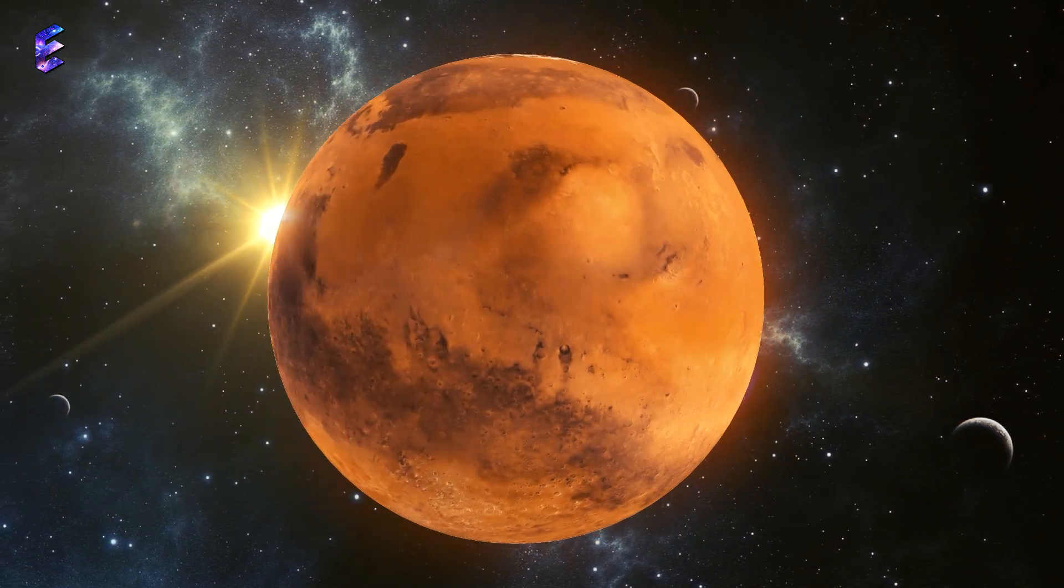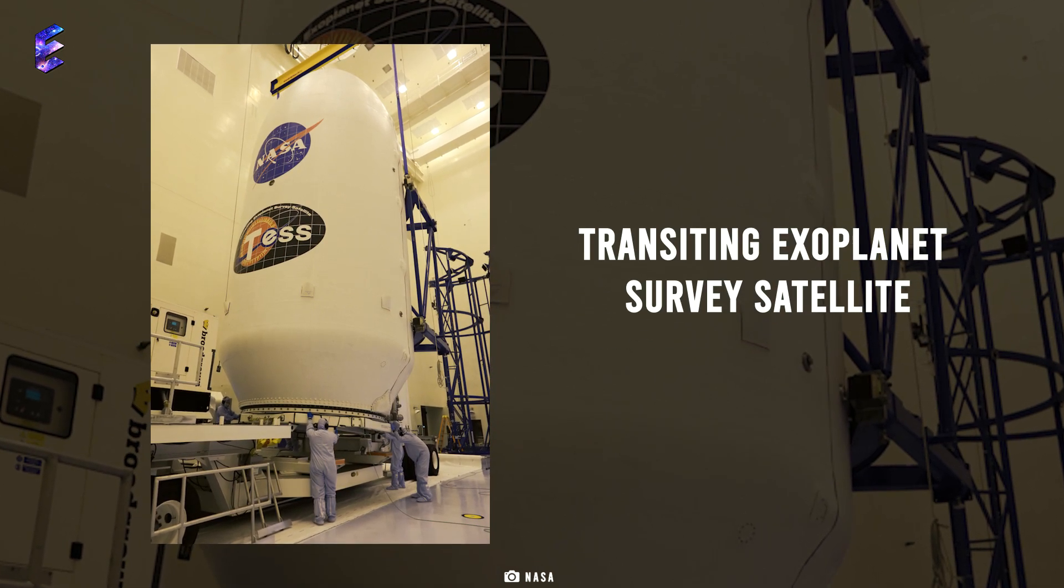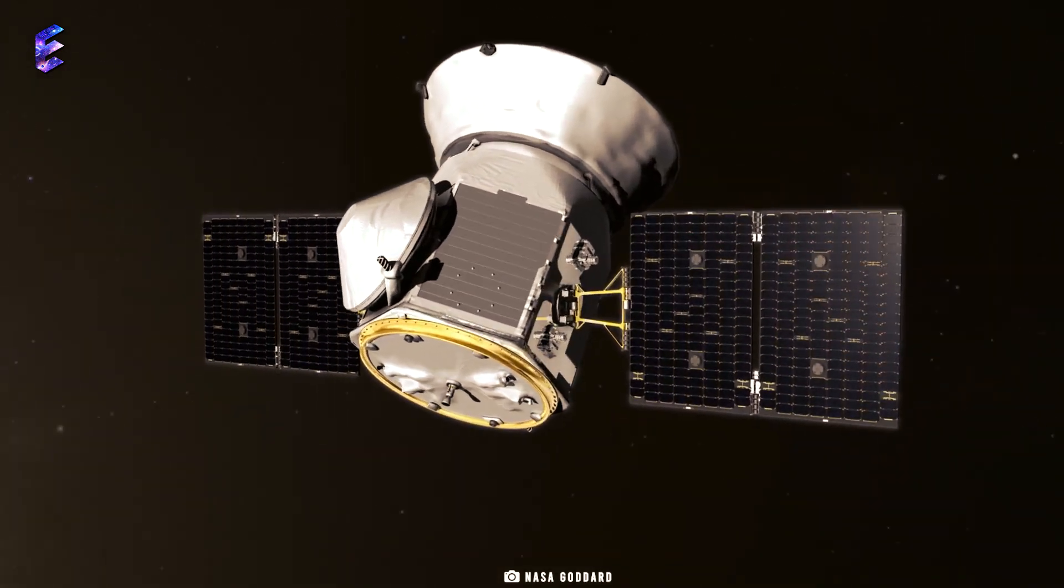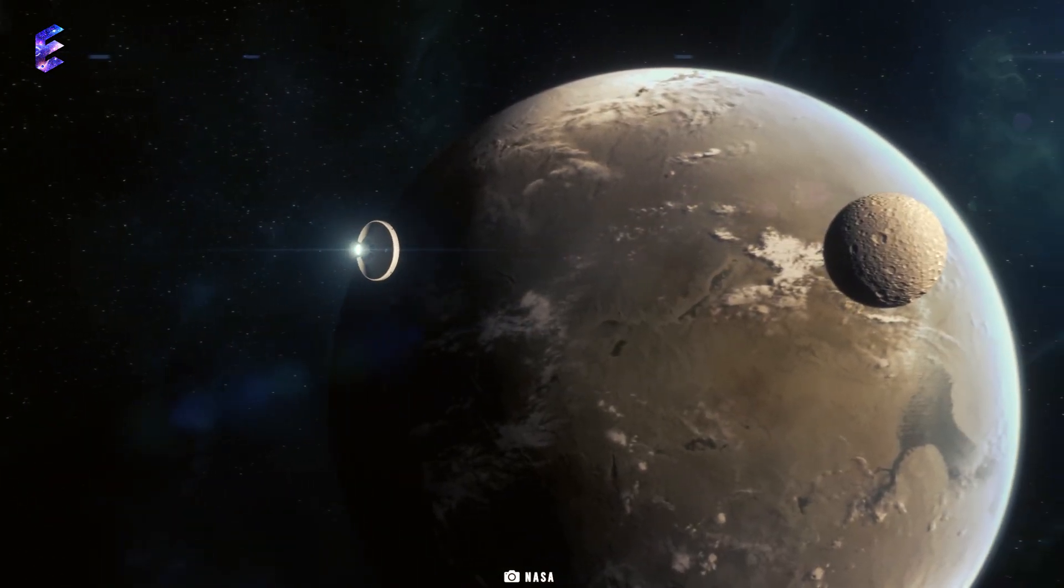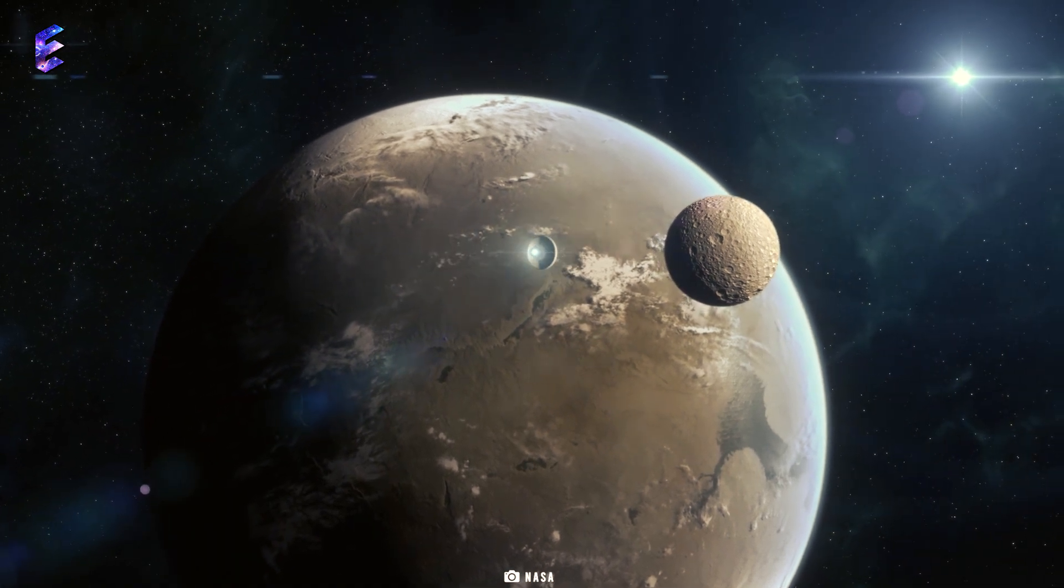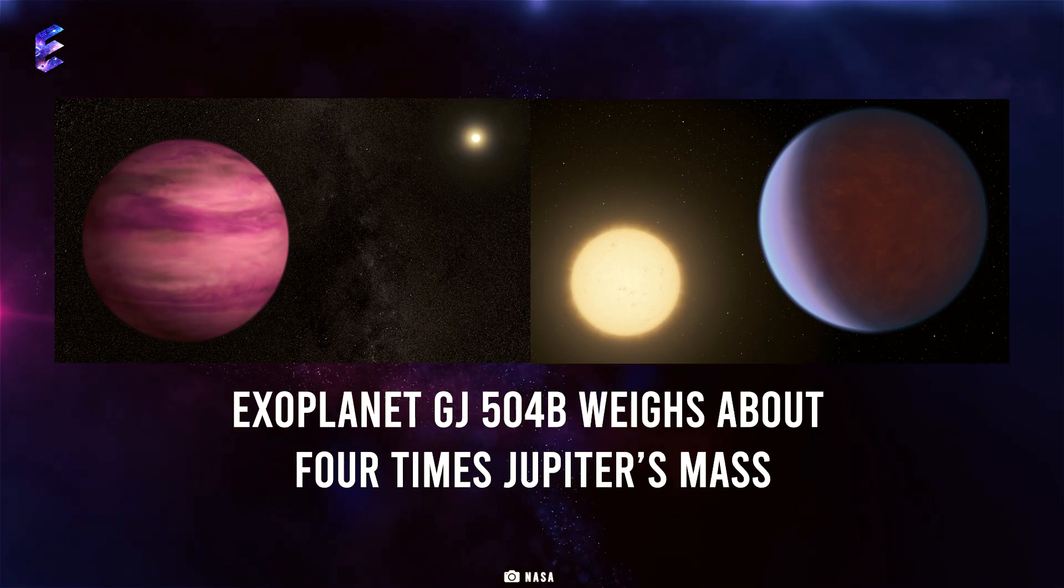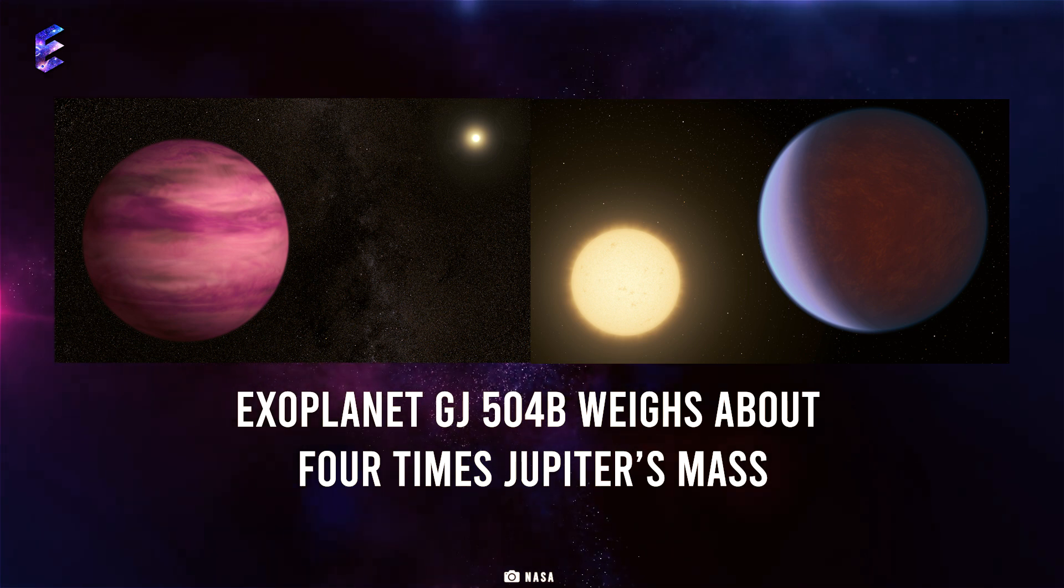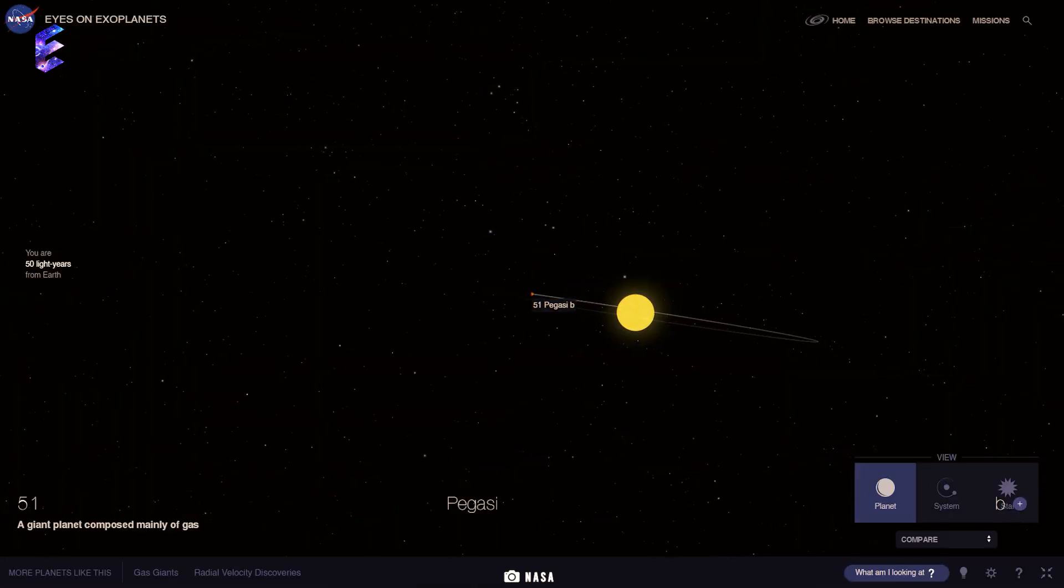And thanks to the invention of the Transiting Exoplanet Survey Satellite, also known as TESS, scientists have discovered 5,500 plus exoplanets existing beyond our solar system. In March 2022 alone, NASA discovered 65 exoplanets. In fact, exoplanets also have an exomoon, just like our moon, or extrasolar moons that orbit them.